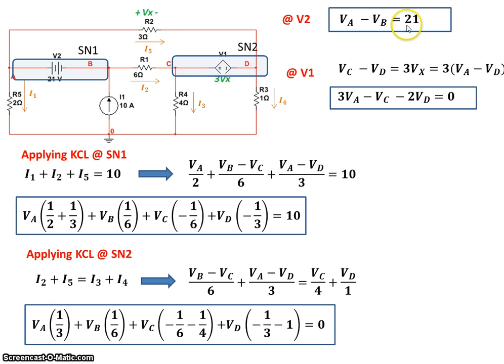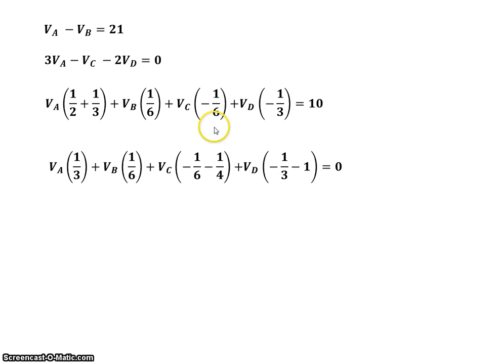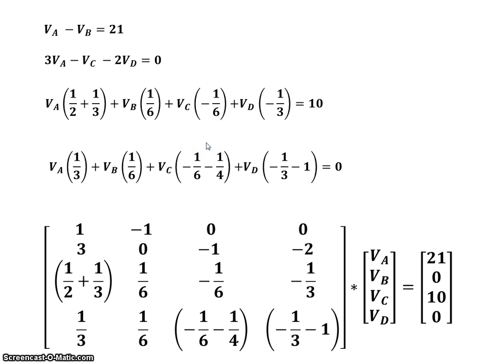So we have here four equations. We have one equation in terms of VA and VB. We have second equation in terms of VA, VC, VD. Third equation in terms of the four voltages is VA through VD. And the fourth equation VA through VD. So we have four equations and we have four unknowns.